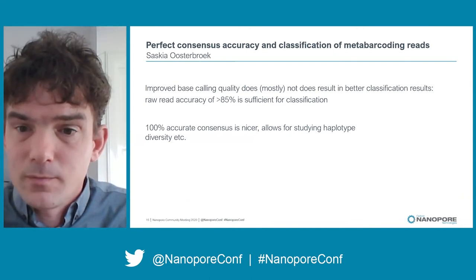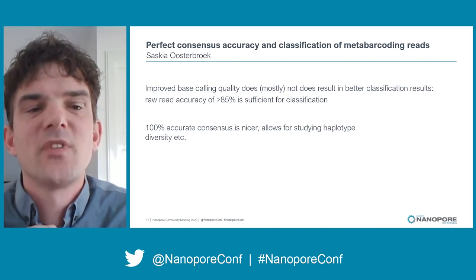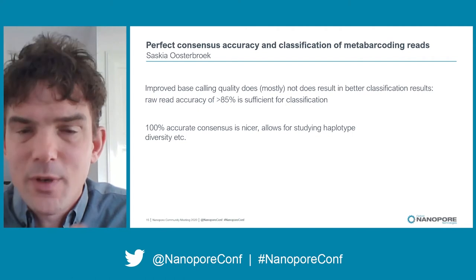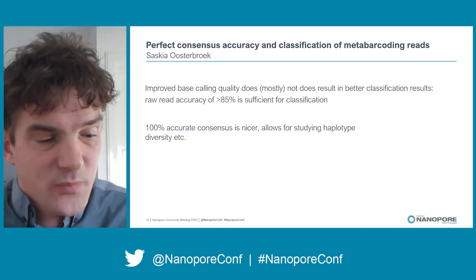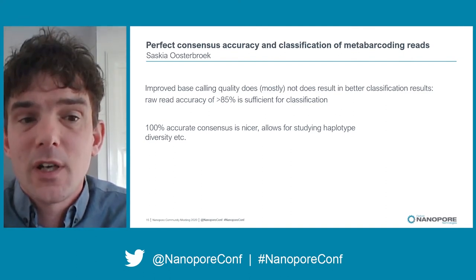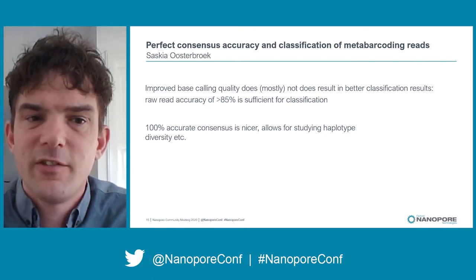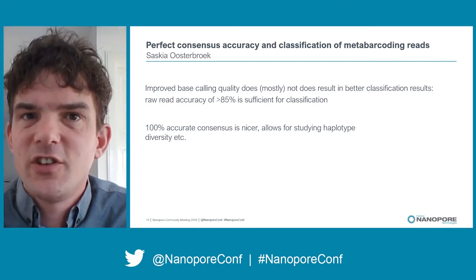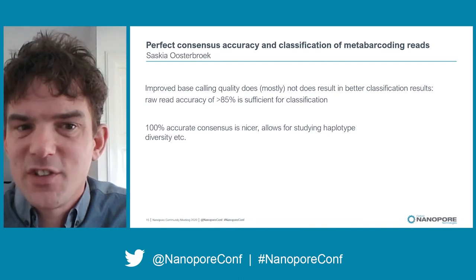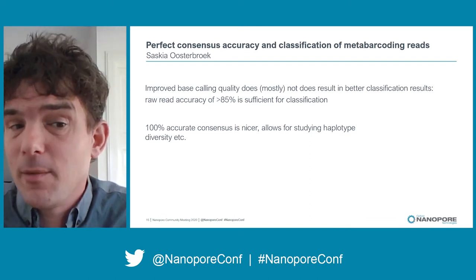Nanopore sequencing still does not deliver 100% accurate reads, which is often perceived as an issue for metabarcoding when you're looking for 1–3% sequence differences to separate species. However, with improved base calling it generally does not result in better classification — raw read accuracy of 85% or higher is most of the time sufficient for proper species classification. Still, a 100% accurate consensus sequence is always nicer, as it allows studying haplotype diversity.